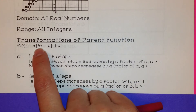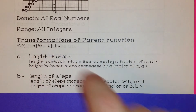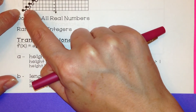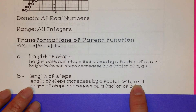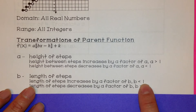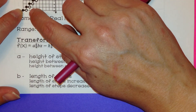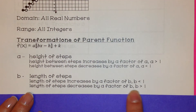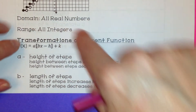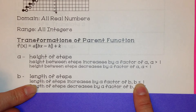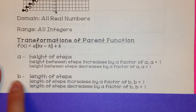'b' is a little different — it's the number multiplied by x inside the brackets, and it affects the length of the steps. The length of steps increases by a factor of b if b is less than 1. So if b is one-half, the length of the step will actually increase by 2. The length of steps decreases by a factor of b if b is greater than 1. So if b is 2, the length will decrease by 2. You can think of it as dividing by b, or equivalently, dividing by one-half is the same as multiplying by 2.